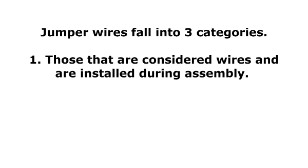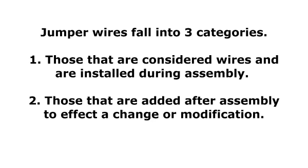Jumper wires fall into three categories. 1. Those that are considered wires and are installed during assembly. The routing, termination, and bonding of these jumper wires are documented by engineering instructions or drawing notations. 2. Those that are added after assembly to effect a change or modification. The routing, termination, and bonding of these jumper wires are documented by engineering change notice instructions or drawing notations.